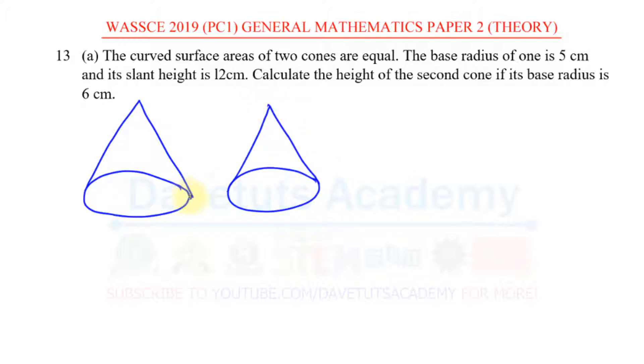These are the two cones then we are told that the base radius of one is 5 cm so this base radius is 5 cm and the slant height, what's the meaning of slant height? It is this inclined height. So, this is 12 cm.